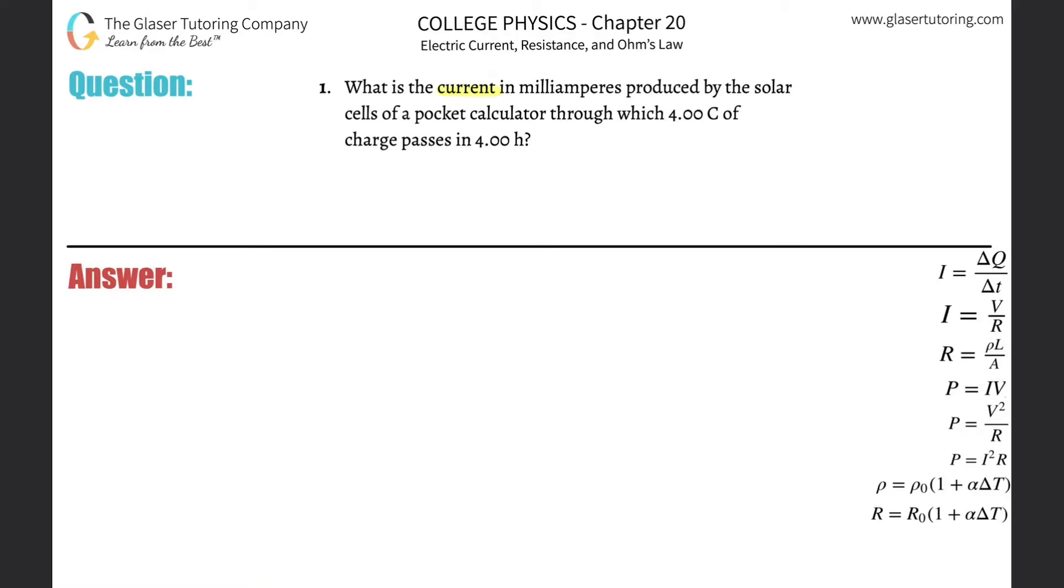Number one: what is the current in milliamperes produced by the solar cells of a pocket calculator through which four coulombs of charge passes in four hours? All right, so the whole idea of current - you can think about it like fluid current - it's just the amount of charge flowing through a particular point in time. So let's just say you have this particular point right here in time, you have a certain amount then of charge flowing past that particular point.